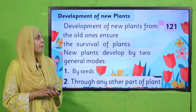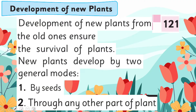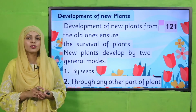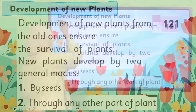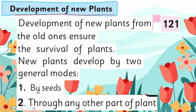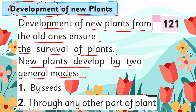Now is the time for reading. Please open page number 121 in your GK2 books. Development of New Plants: Development of new plants from the old ones ensures the survival of plants. New plants develop by two general modes — by seeds, or through any other part of the plant.